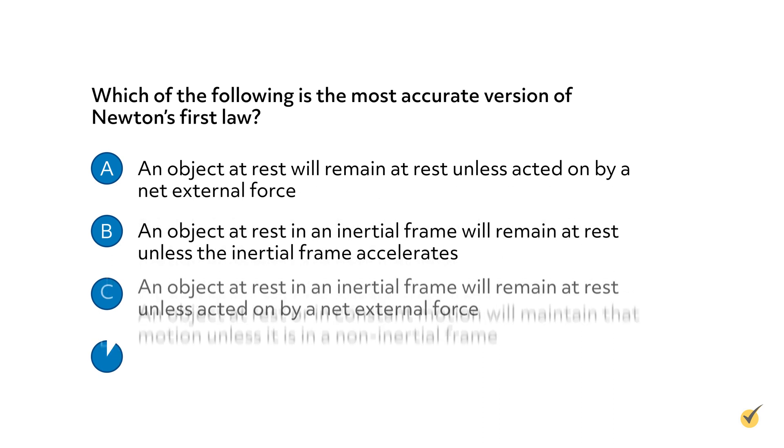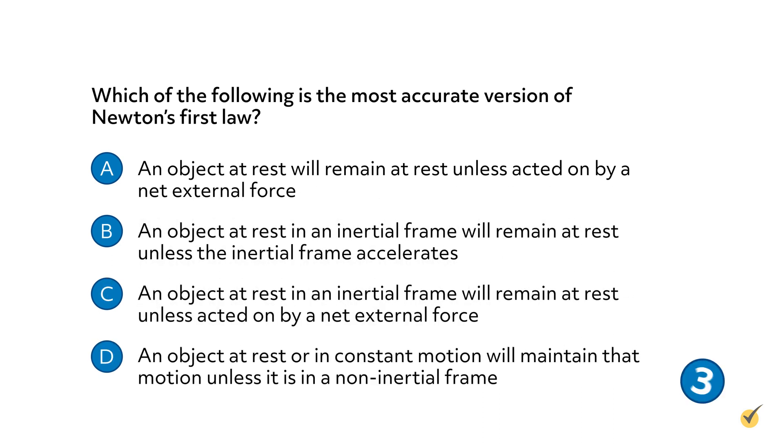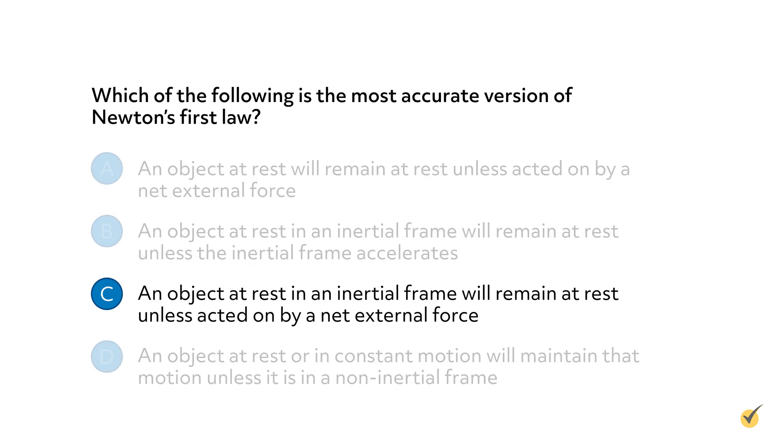Okay, let's wrap things up with a few review questions. Number one, which of the following is the most accurate version of Newton's first law? The correct answer is C.